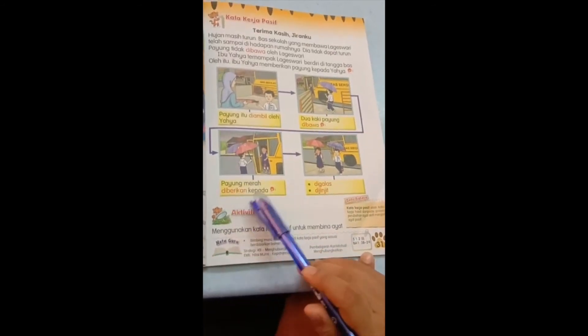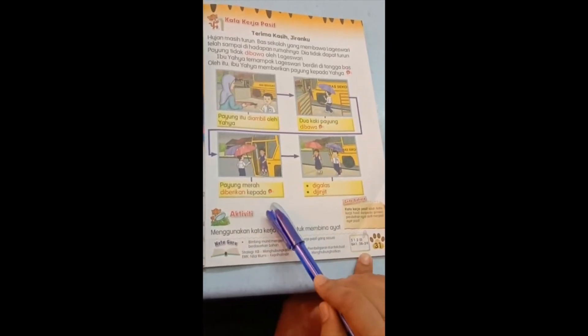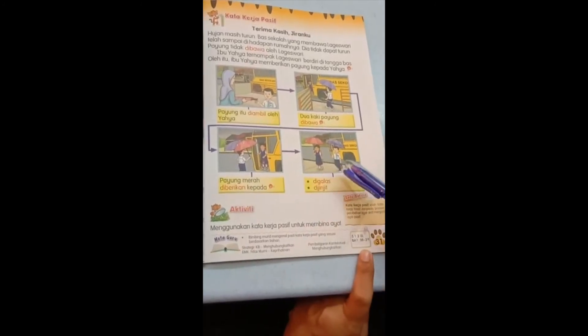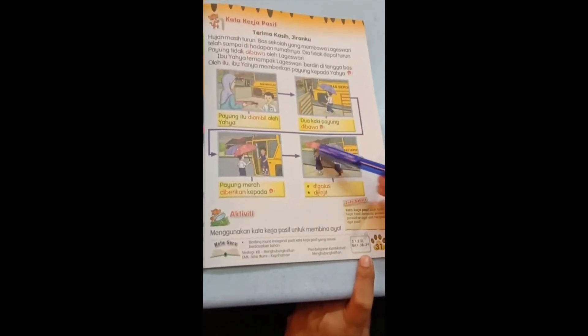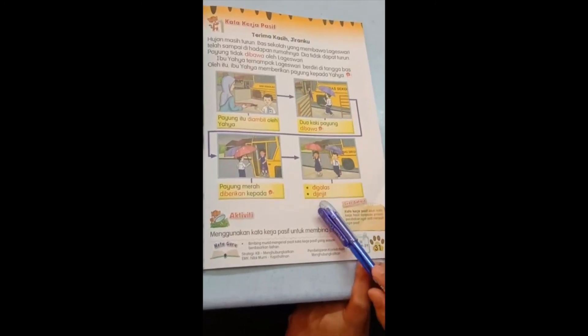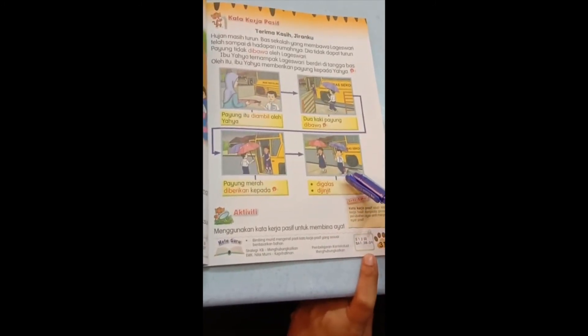Next. Payung merah diberikan kepada the girl's name. You have to fill in the girl's name. Last third sentence and fourth sentence. Kamu kena tulis satu ayat untuk digalas, iaitu the act of carrying back, and dijinjit, the act of carrying the bekas air.